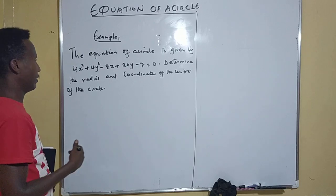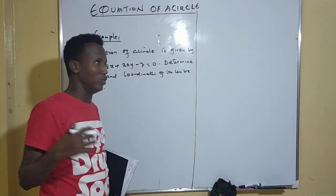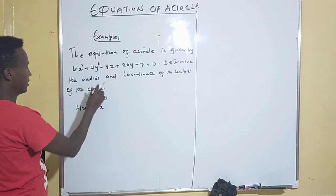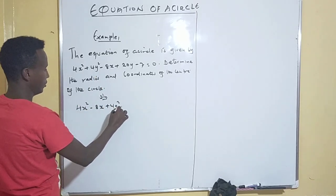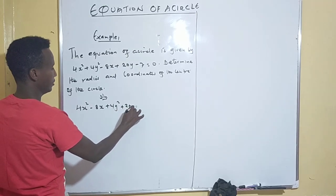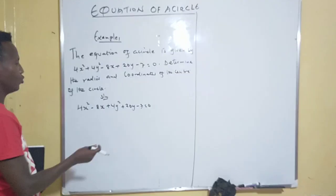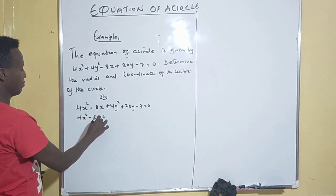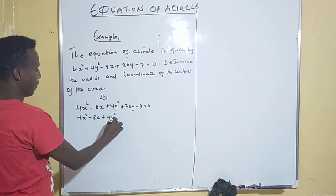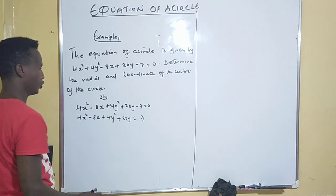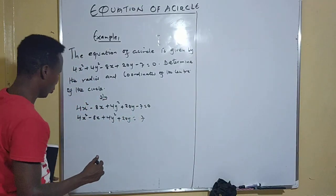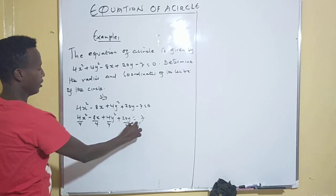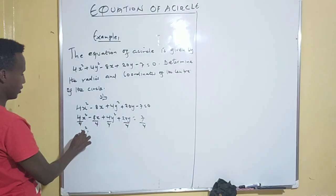This is what we learned in our previous video. Coming to the solution: our equation is 4x² - 8x + 4y² + 3y - 7 = 0. The first thing we do is move the constant to the other side, giving 4x² - 8x + 4y² + 3y = 7. Then we divide throughout by 4.